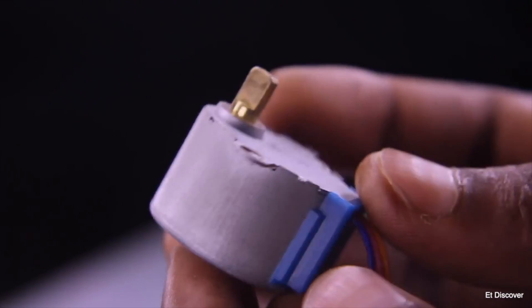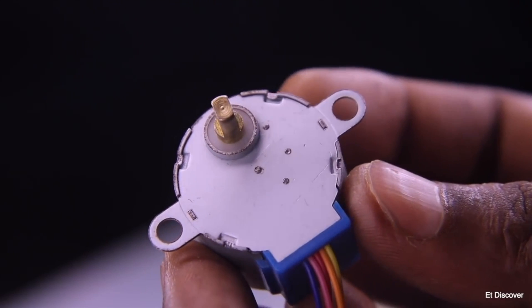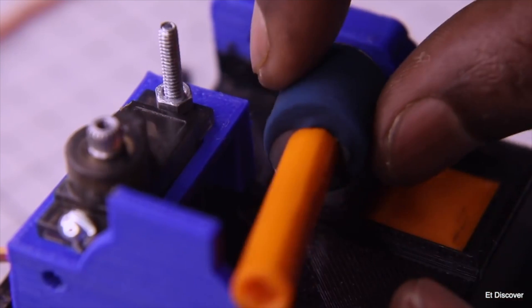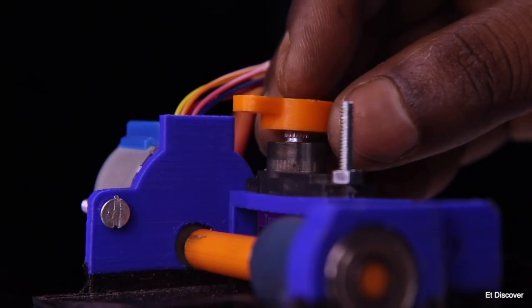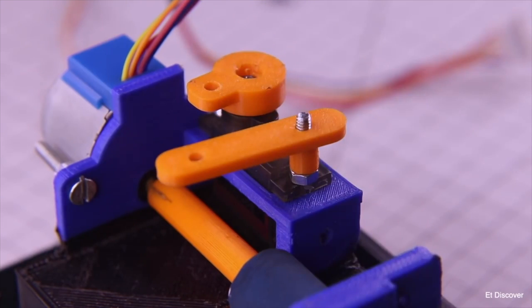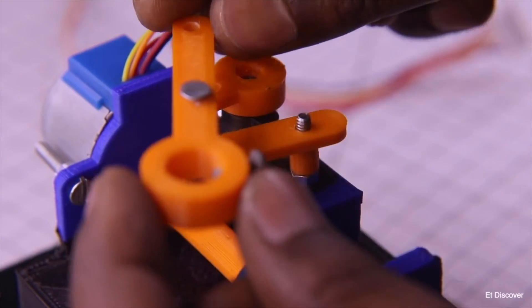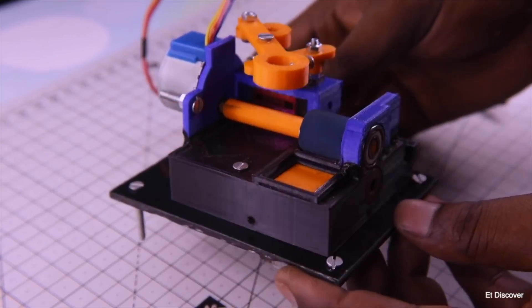Next, you need a 28BYJ48 stepper motor as a Y-axis, which I will attach with my 3D printed roller. Then I will connect all the hands to this servo, and those hands will move on the X-axis in parallel. Our mechanical project is over.